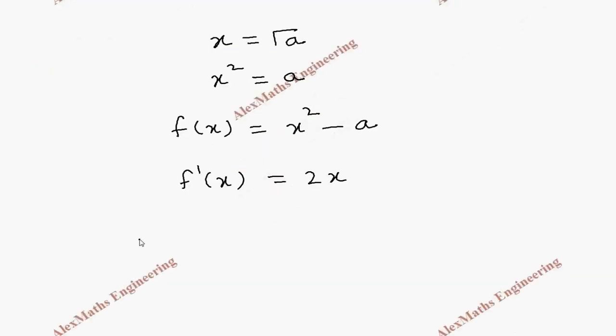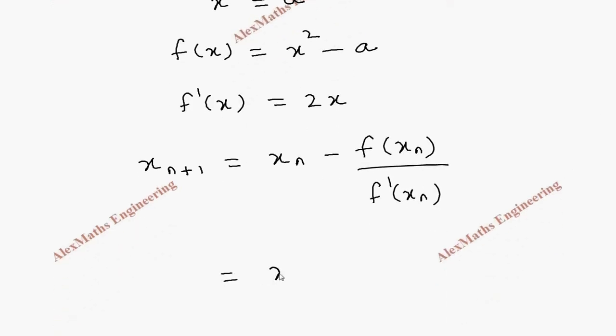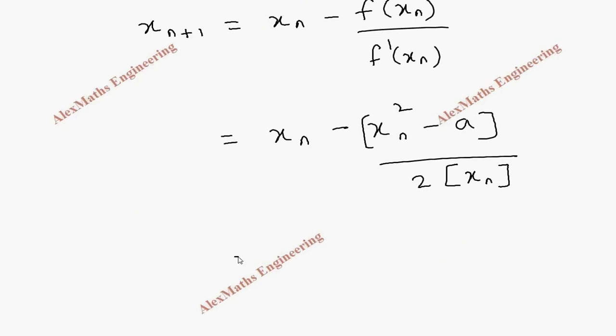Now Newton-Raphson's formula is x n plus 1 is x n minus f of x n by f dash of x n. So we can substitute this. Now this is x n minus x n square minus a whole divided by 2 into x n. So we can take LCM and simplify further.